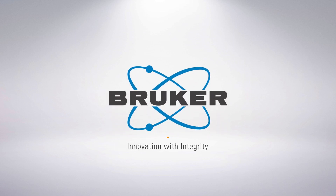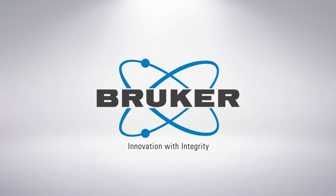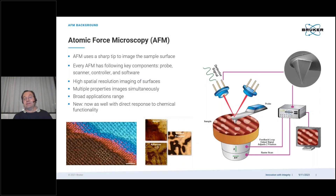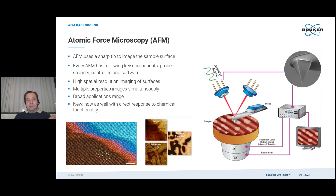Let's start with the AFM technology. AFM is a mechanical microscope. It uses a very sharp, atomic-scale tip which is placed at the end of a very flexible micro-machined cantilever. This tip is raster scanned across the sample surface, and during that scan it feels the interaction with the surface, which deflects the cantilever, which is measured by a laser triangulation system.